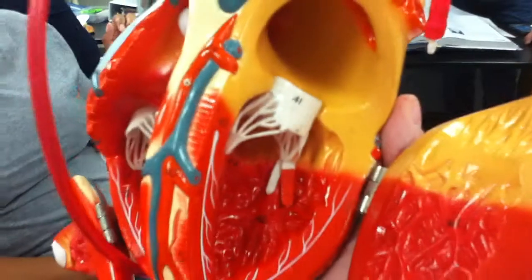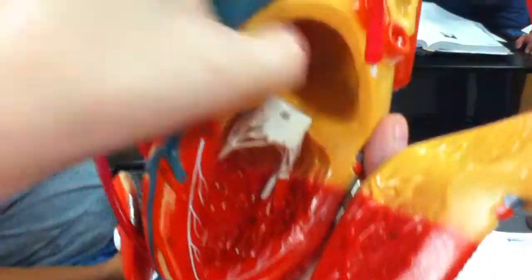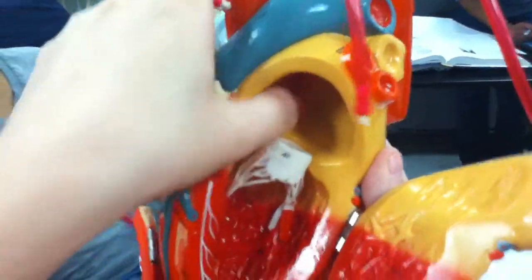This will be the right auricle, this will be the left auricle. This is the right atrium, left atrium. The interatrial septum is here, the wall that separates the atria.